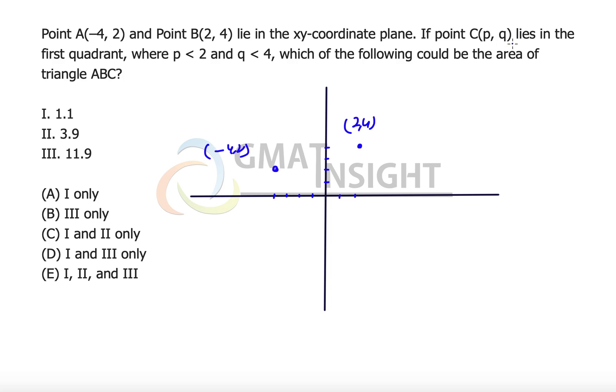Now if there is another point C, this is point B and A respectively. If point C(p, q) lies in the first quadrant, somewhere in the first quadrant we have another point C. The question states where p is less than 2 and q is less than 4. Let's quickly draw the boundaries of these two parts. That means x-coordinate should be less than 2. Drawing a line of x-coordinate less than 2, that means the point should be to the left of this line.